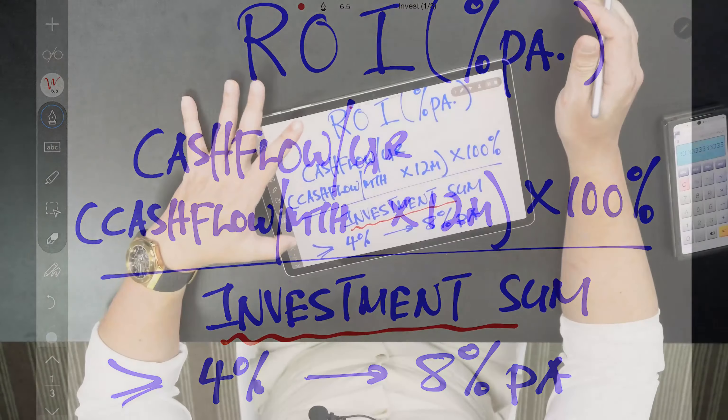Your ROI can usually be something like four percent all the way to eight percent per annum. This gives you a return on how much money you put into banks or investments like EPF, bonds, unit trusts, or stocks to get dividends. If the dividend yield is anywhere from six to eight percent, you're going to get more money coming in.